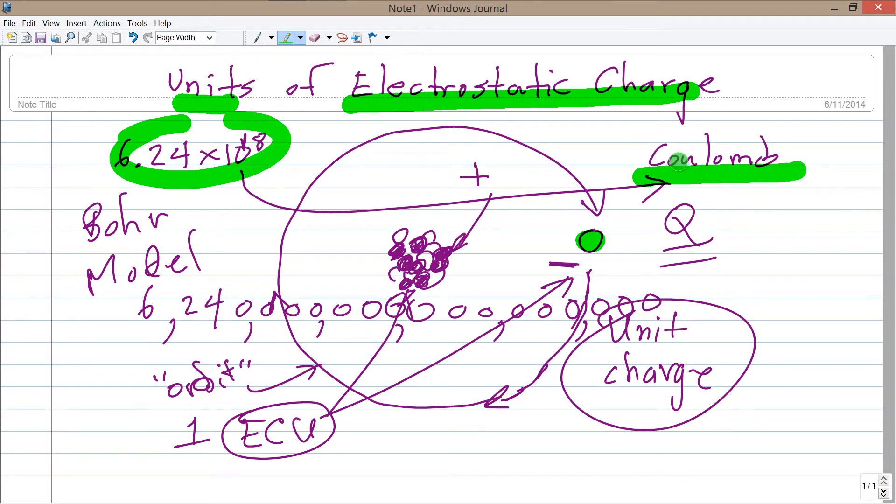You get a current of one ampere. So one ampere equals one coulomb per second.